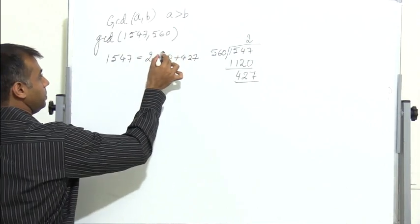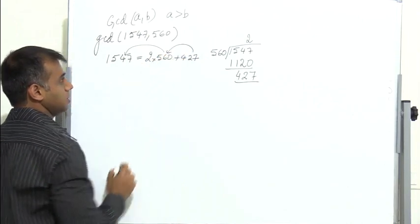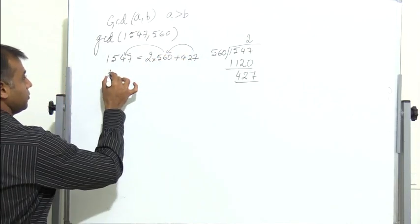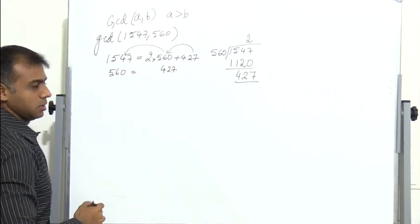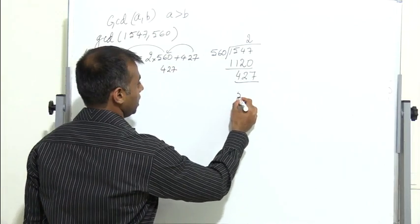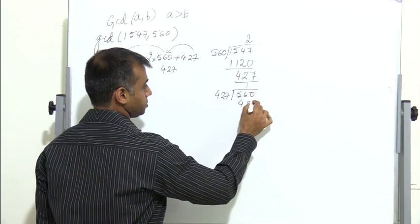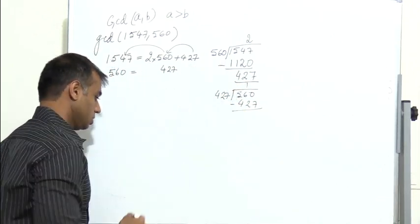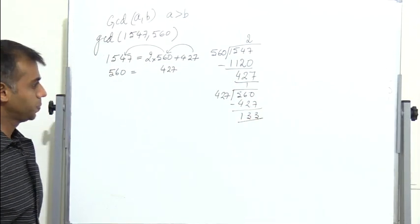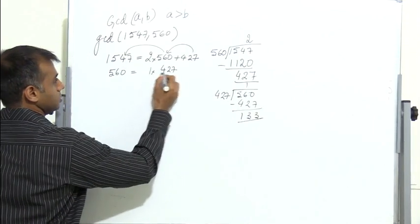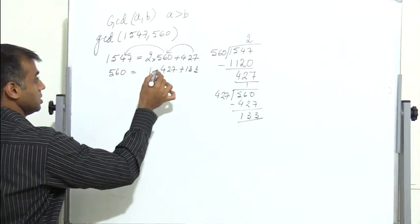Now I replace 1547 by 560 and 560 by 427. So I have 560 equals 1 into 427 plus 133. The quotient is 1 and the remainder is 133.